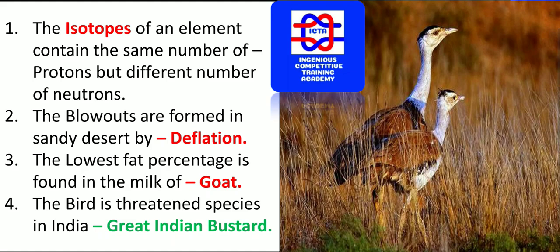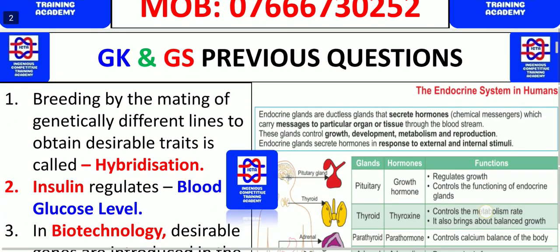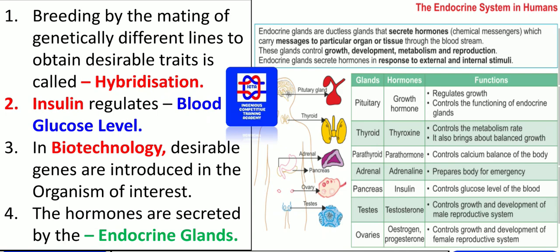In the case of the camel, you have the maximum fat content in milk. The Great Indian Bustard is the threatened bird species in India. Next, breeding by the mating of genetically different lines to obtain desirable traits is known as hybridization.